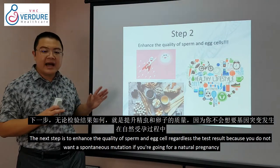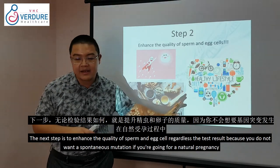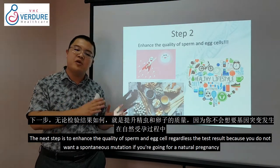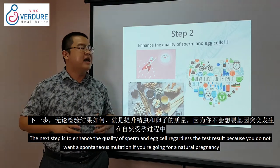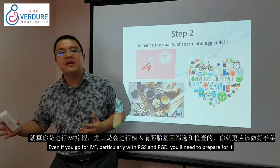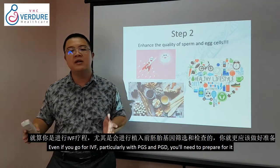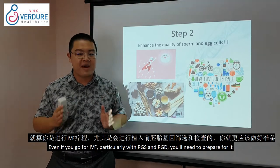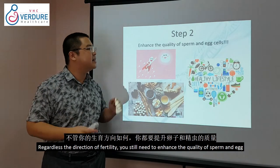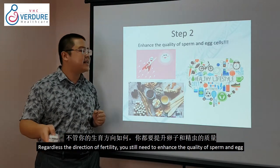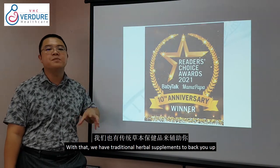Step 2, regardless of the result, is to enhance the quality of sperm and eggs. Even if you go for natural pregnancy, you wouldn't want a spontaneous mutation, and if you need IVF with PGS or PGD, you need to prepare for it. We have traditional herbal supplements to support this.